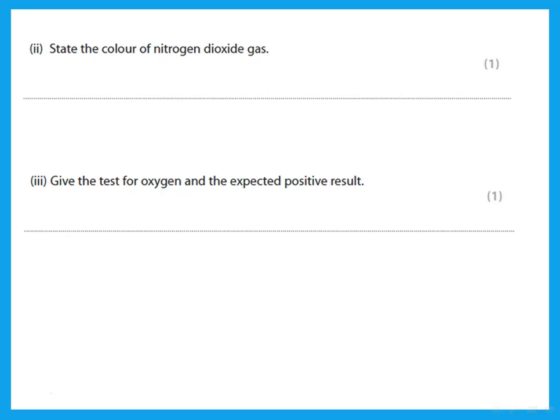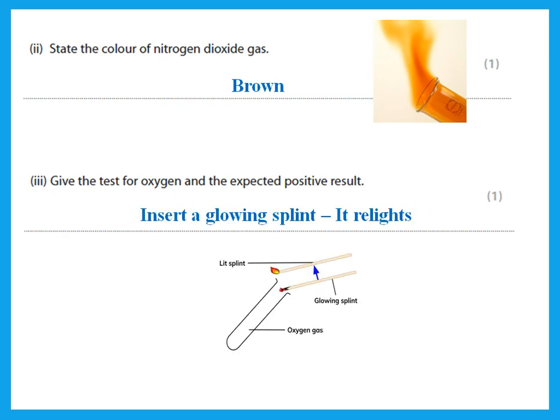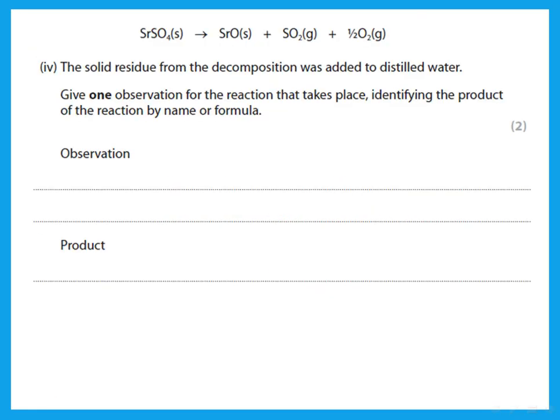State the color of nitrogen dioxide gas. It is a brown gas. Give the test for oxygen and the expected result: insert a glowing splint, it relights. The solid residue from the decomposition was added to distilled water. Give one observation for the reaction. The solid residue is strontium oxide, so if I dissolve it in water, the solid dissolves to form a colorless solution because it will form strontium hydroxide.